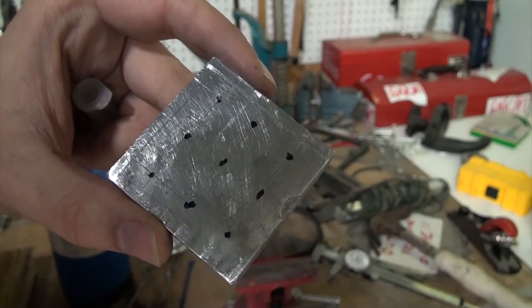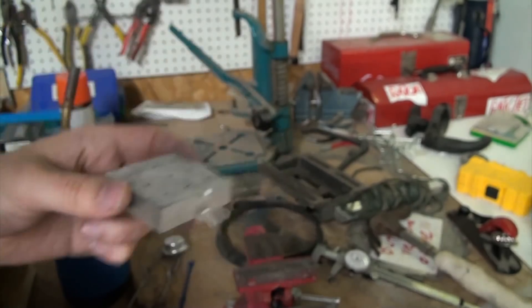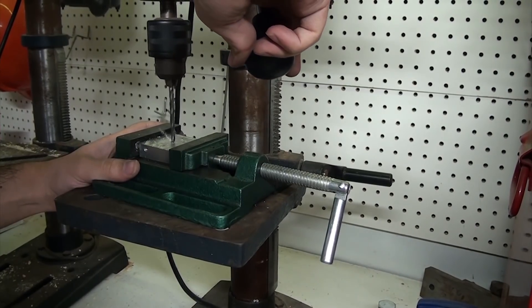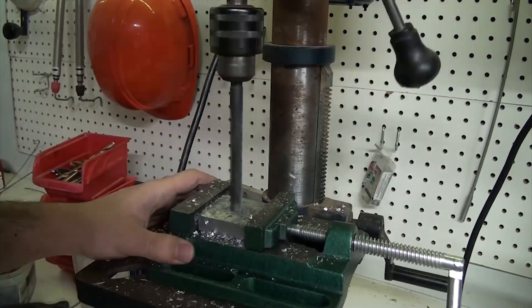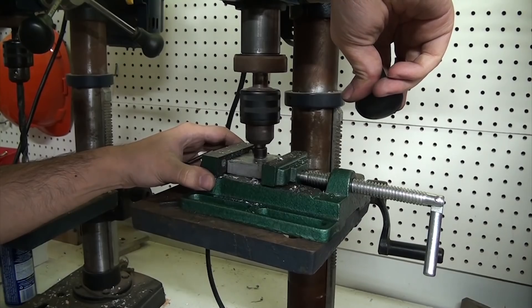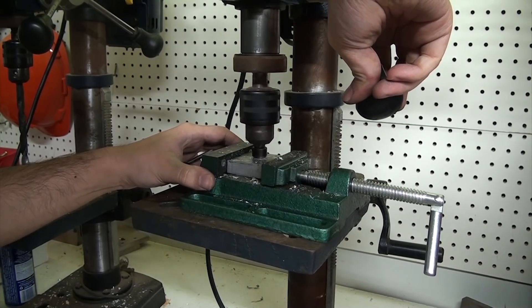I marked out 9 holes originally, but decided that 5 would probably work better. Starting with the top section, a small drill bit was used to start the holes, and then they were bored out with a larger 11mm bit. Once the holes were drilled, they were countersunk to make it easier to fit in tubes without scratching up the sides of them.